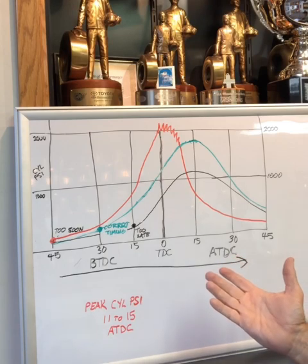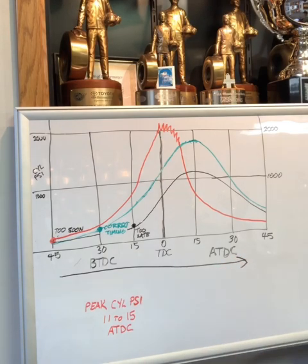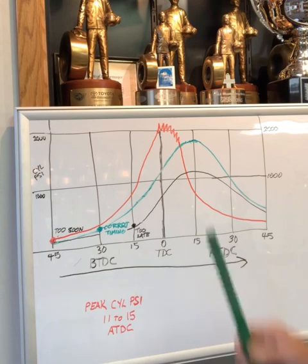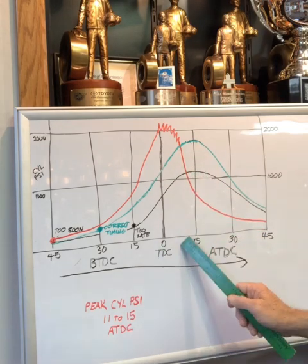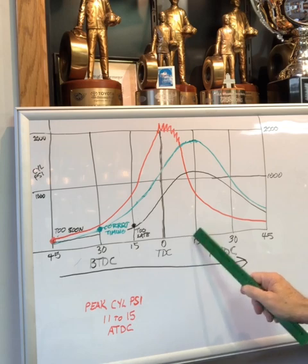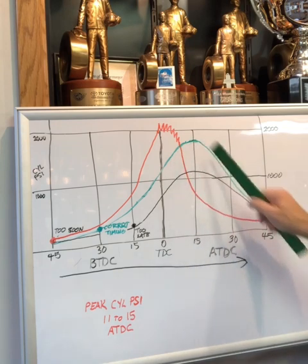Now that's at full throttle, full RPM. Our target to make the most power is around 15, 13, 14 degrees after top dead center. So how do we get that?